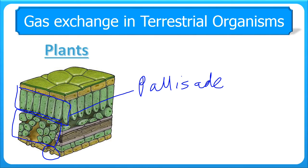It's an easy route for carbon dioxide that is needed to diffuse in and get to those palisade cells. Those cells produce, through photosynthesis, the waste gas oxygen. That oxygen then has an easy passage through the spongy layer and out through the stomata to return to the air.